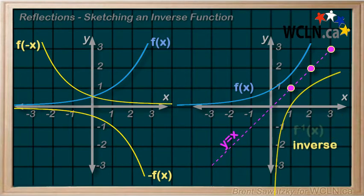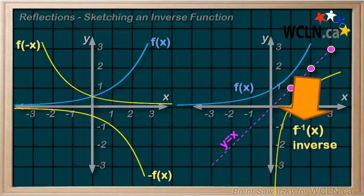And we can indicate an inverse by putting a little superscript negative 1 right here. This indicates that this relation is the inverse of f in terms of x.